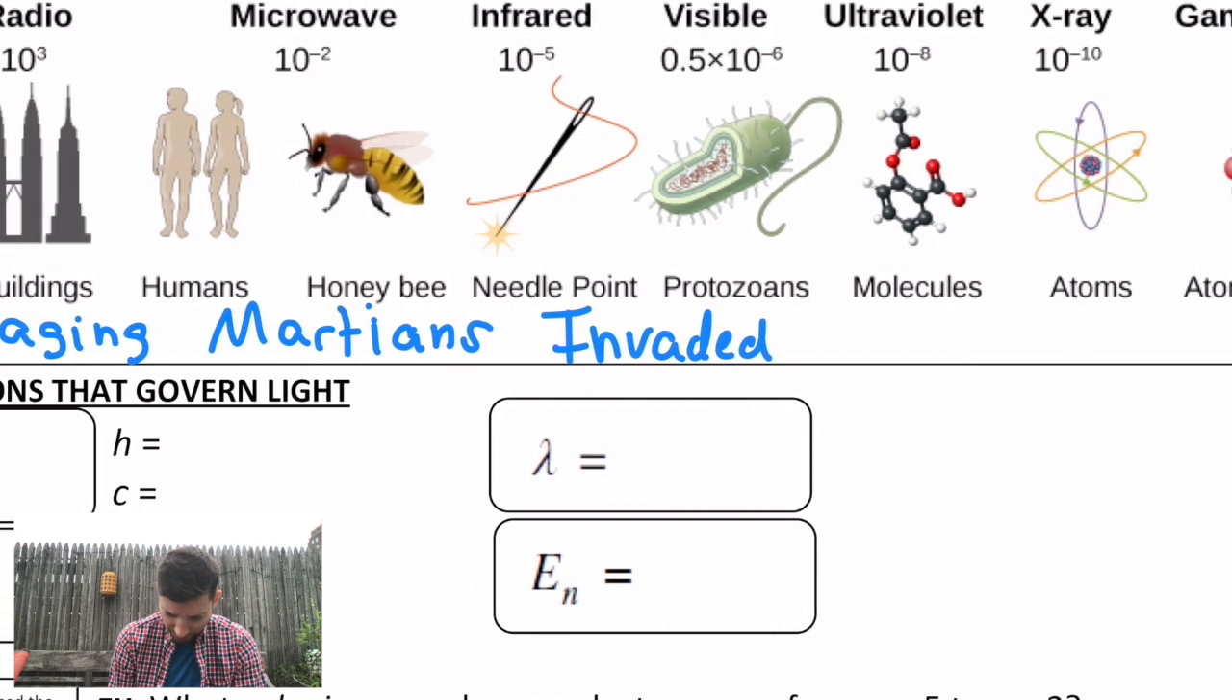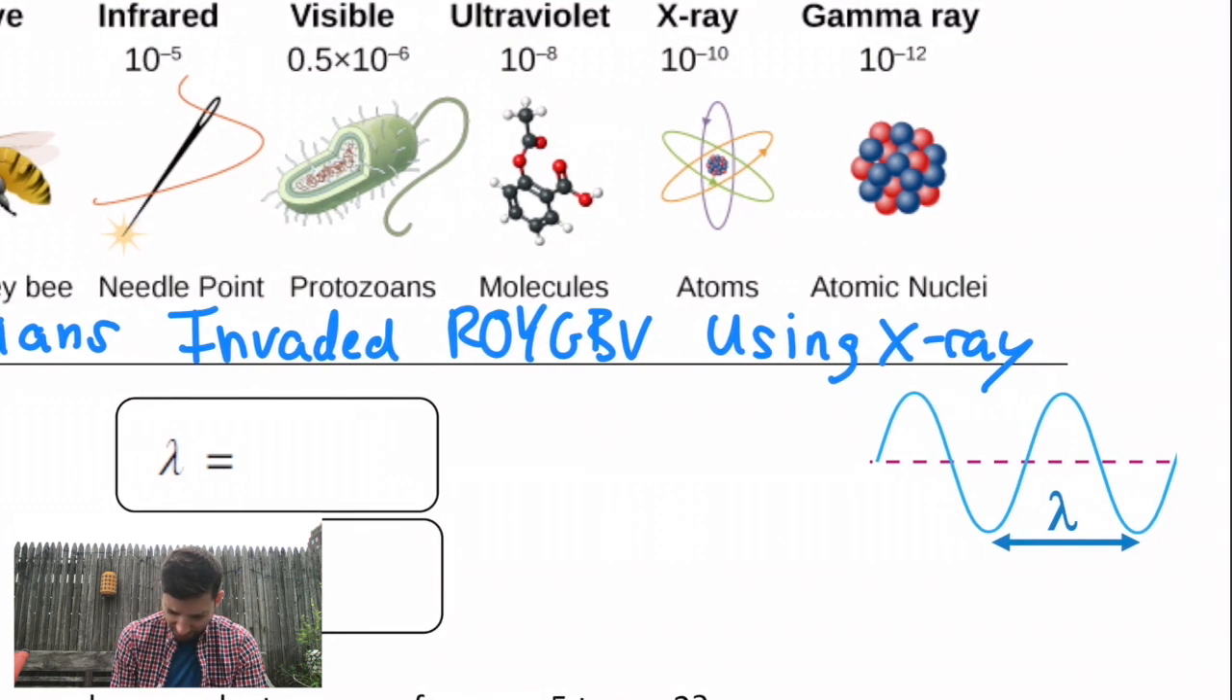And it says, raging Martians, just picturing actual raging Martians, invaded a place called RoyGBiv, using x-ray guns. So something very visible, visual, and kind of funny to remind us of the order from low energy...